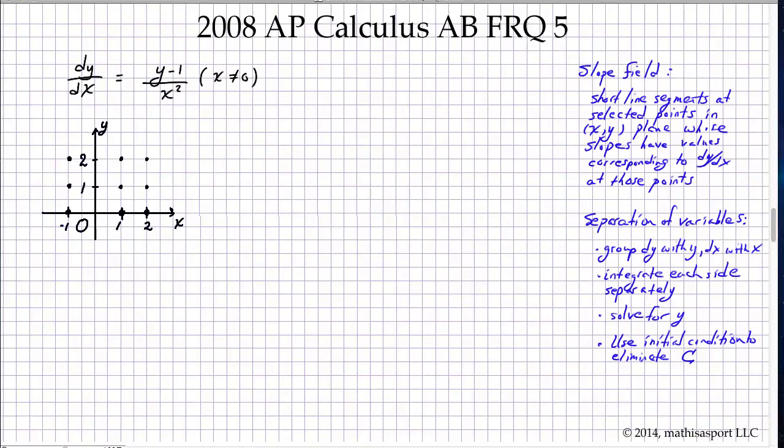So typically we look for some sort of pattern in these functions. For example, here we see that if Y were equal to 1, assuming X was not 0, then the numerator is 0 and therefore the entire slope is 0. So for all of the Y equals 1 points, I'm just going to draw a perfectly flat slope.